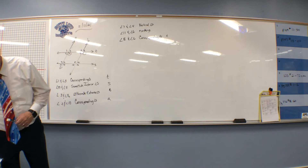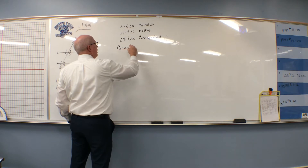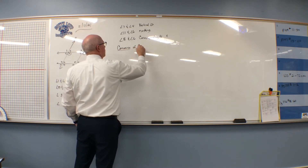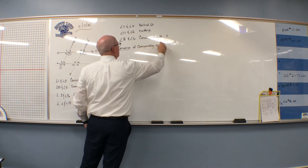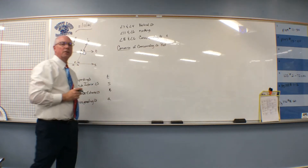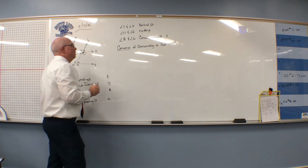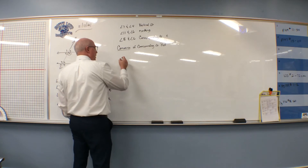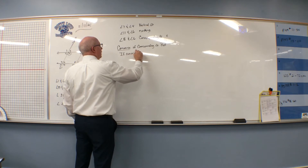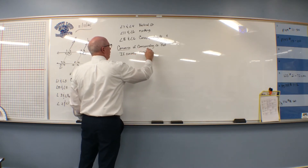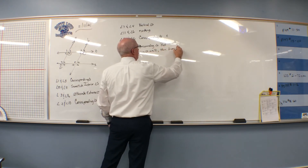I'm going to begin with the first one: the converse of the corresponding angles postulate. Remember, it was a postulate, not a theorem — we can't prove it. The converse of the corresponding angles postulate says: if corresponding angles are congruent, then lines are parallel.